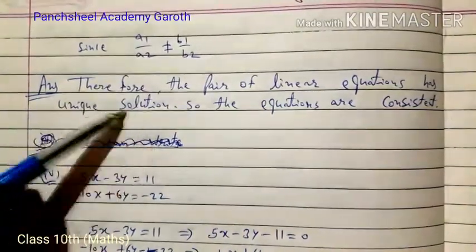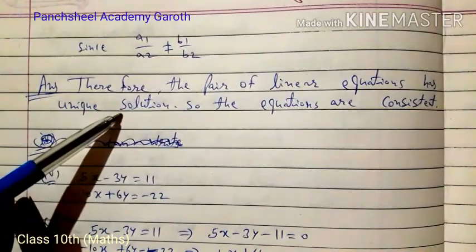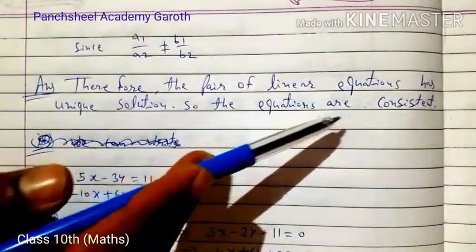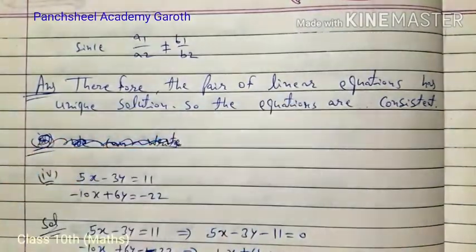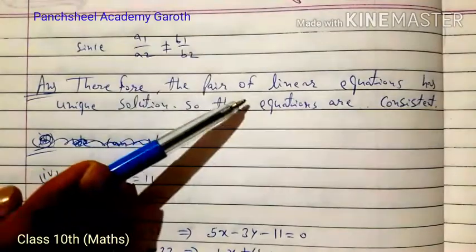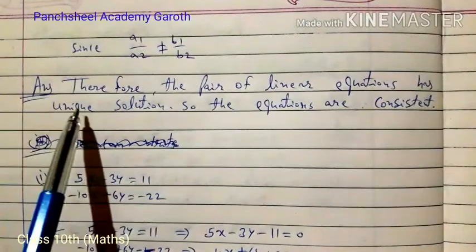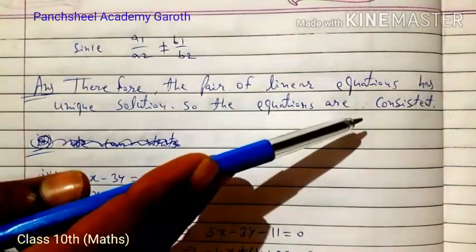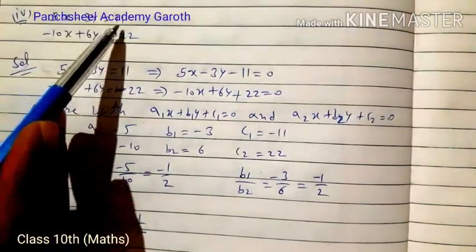Since a1/a2 ≠ b1/b2, the pair of linear equations has a unique solution — that is, a single solution. This means the two lines are intersecting lines. Therefore, the equations are consistent.